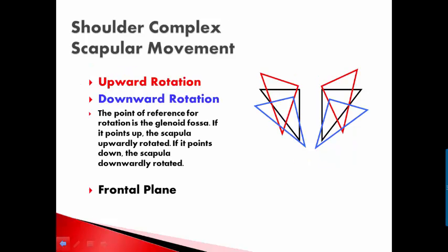There is also upward and downward rotation of the scapula, also in the frontal plane. The point of reference for rotation is the glenoid fossa. So if the glenoid fossa starts to point up, the scapula is upwardly rotating. If the glenoid fossa points down, the scapula has downwardly rotated. As you go through abduction, you have upward rotation of the scapula, and as you go through adduction, you have downward rotation of the scapula.